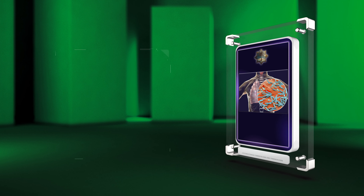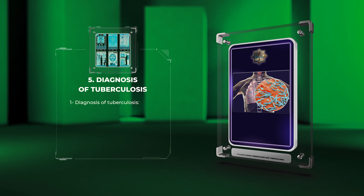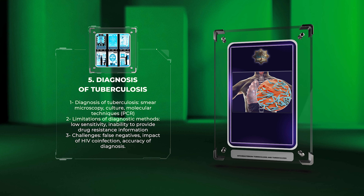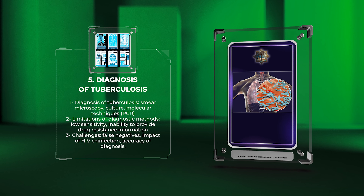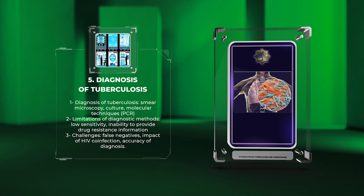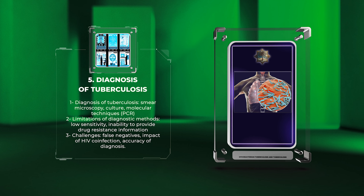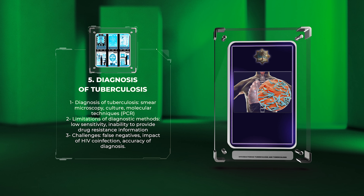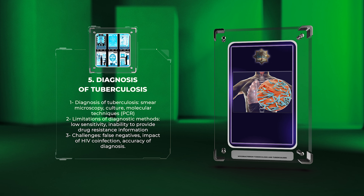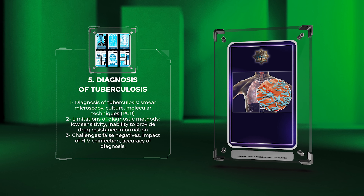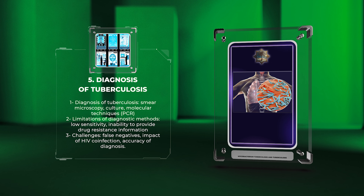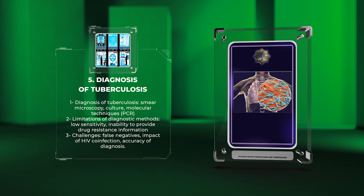In the diagnosis of tuberculosis, various methods are used, including smear microscopy, culture, and molecular techniques like PCR. However, each method has its limitations, such as low sensitivity or inability to provide drug-resistance information. Challenges such as false negatives and the impact of HIV co-infection also affect the accuracy of diagnosis.